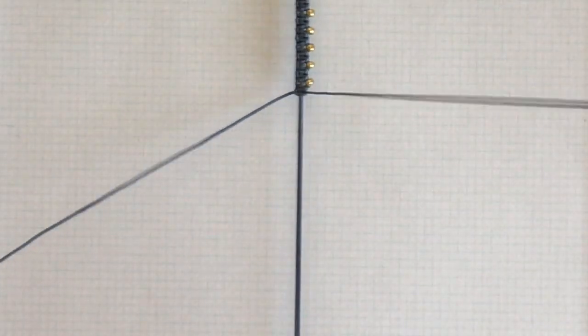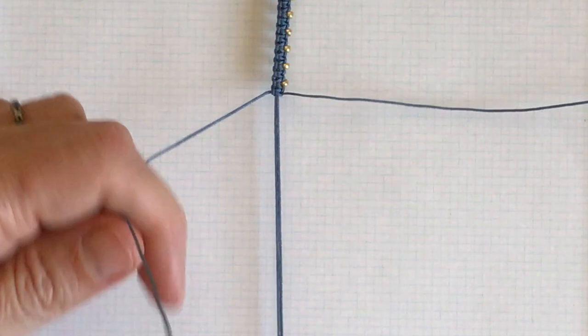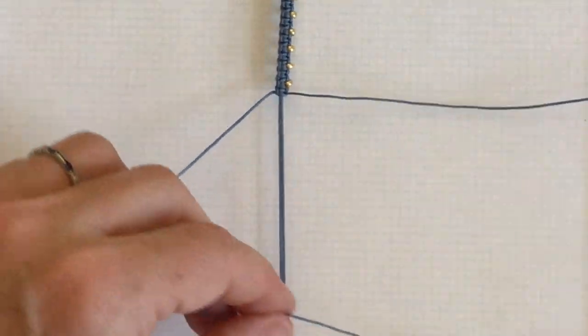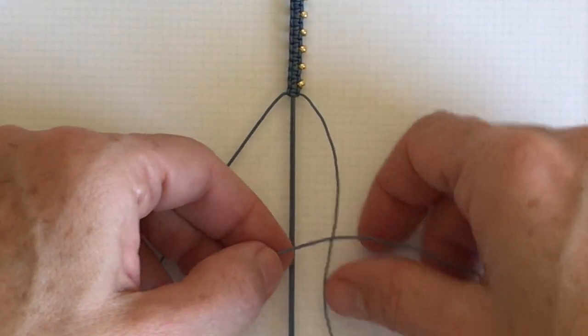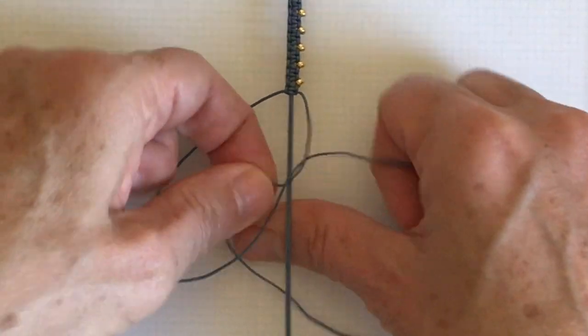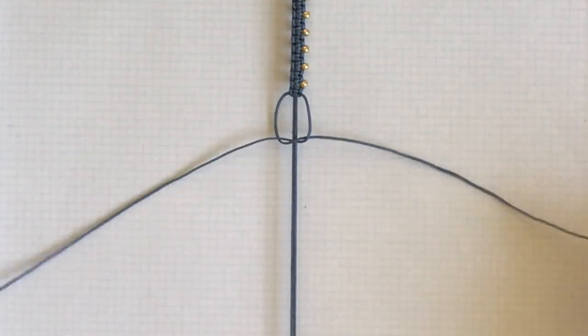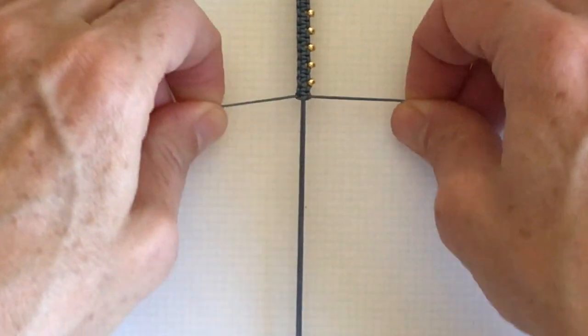And then another one on the left hand side. And that cord that on the right comes over and up and through. And then it's time to repeat, add another bead.